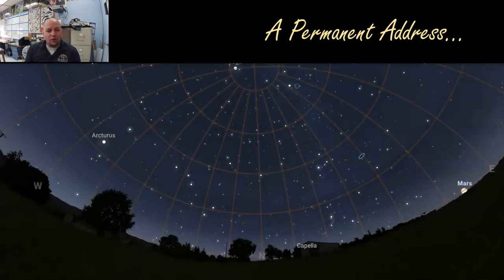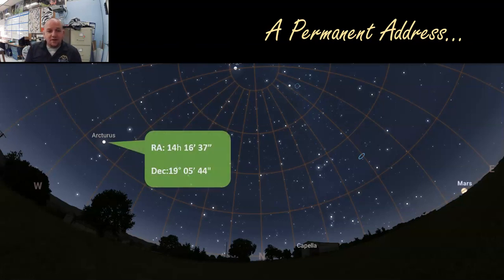With this system, we can talk about permanent addresses of every star in the sky. When I call up a friend and say Arcturus is super bright today, I can tell them: Arcturus has a right ascension of 14 hours, 16 minutes, and 37 seconds, and a declination of 19 degrees, 5 minutes, and 44 seconds. That's where it is — it doesn't matter what day or what time, that's where it's going to be. That gives us our permanent system for talking about where objects are in the sky.